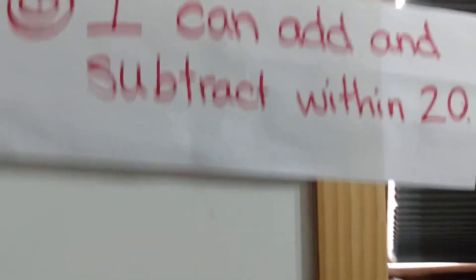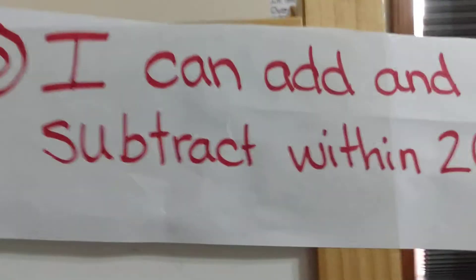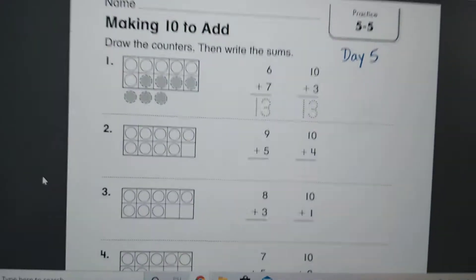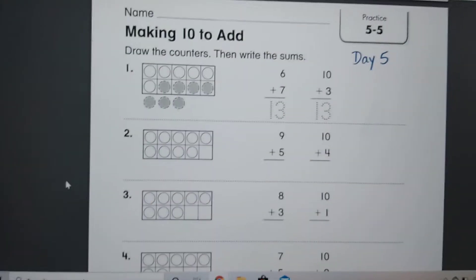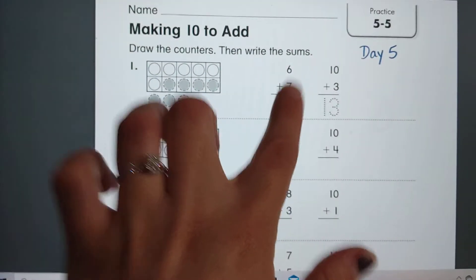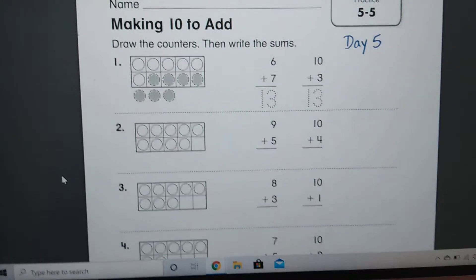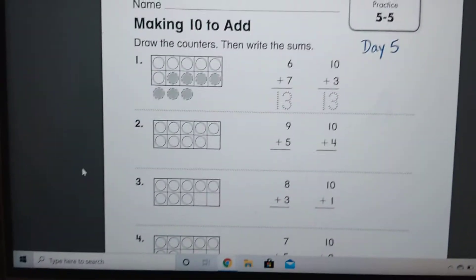So we are doing math and our worksheet today will be this one right here and it's called making 10 to add. So what you're going to do is make 10 from the numbers that we are given right here from our number sentence. So this is a new strategy for addition strategies is making 10.